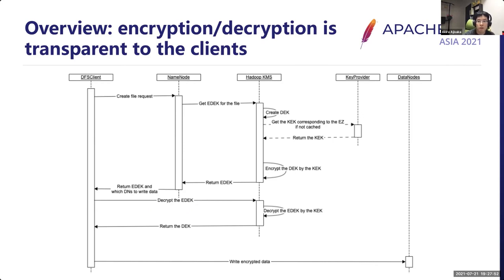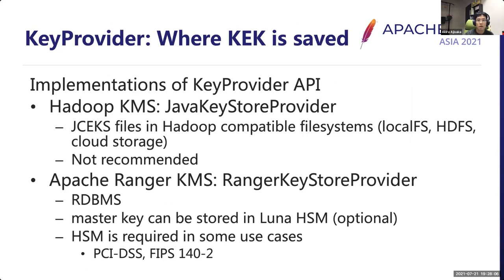There are two new components in transparent data encryption: Hadoop KMS and key provider. The key provider is an API provided by Hadoop, and Hadoop provides its implementation called Java key store provider. In this implementation, KEKs (key encryption keys) are stored as JCEKS files in Hadoop-compatible file systems such as local file system, HDFS, S3, and other cloud storages. However, the Java key store provider is experimental, requires careful handling of passwords, and the JCEKS file itself is not encrypted in many Hadoop-compatible file systems. For that reason, it is not recommended in production environments.